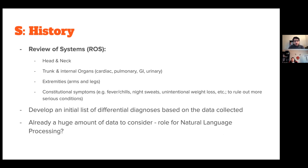We also do a review of systems, looking at head and neck, trunk and internal organs, extremities, and constitutional symptoms. We might ask about shortness of breath, vomiting, diarrhea, or urinary symptoms. Constitutional symptoms like fevers and chills, night sweats, and unintentional weight loss can help rule in or rule out serious conditions like cancer. Once we have all this information from history and presentation, we develop an initial list of differential diagnoses — and NLP could come in handy to process this data.